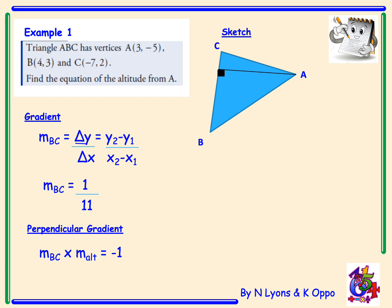The perpendicular gradient, using the perpendicular rule, would therefore be negative 11. We are then going to use this gradient and the coordinates of A(3, -5) to find the equation of the altitude.